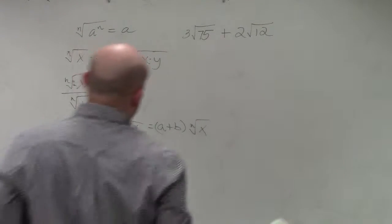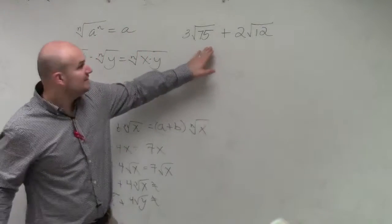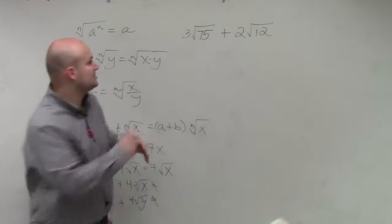So in this problem, can we simplify square root of 75? These are squares, so we want to rewrite these as squared terms.